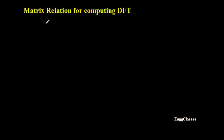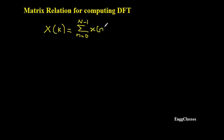We already know the DFT equation: X of K is the DFT of the given sequence x of n. X of K is equal to summation n equal to 0 to capital N minus 1, of x of n multiplied by W_N to the power k times n, where W_N is the twiddle factor, and K varies from 0 to capital N minus 1. This is the equation to find the DFT of any given sequence in a conventional way.